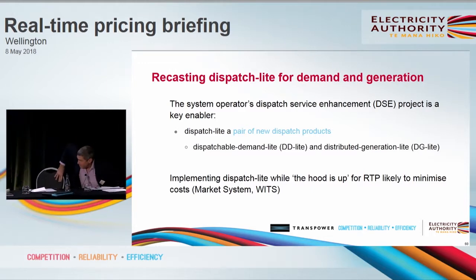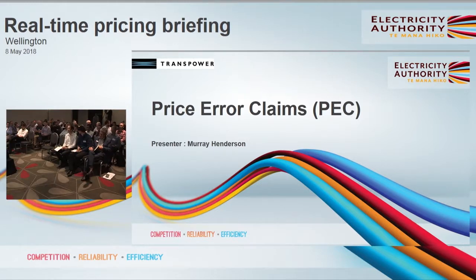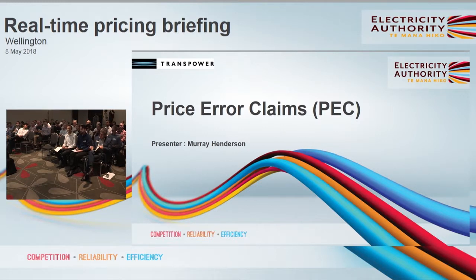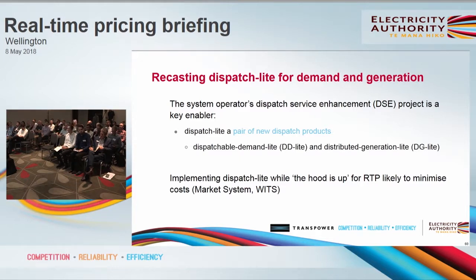I'll move on to pricing errors then. One more question. Since we're the only participant in dispatchable demand, a couple of questions. Firstly, EMI already discloses the Norski price so it is publicly discoverable now — though I think that's only the next day. Yeah, but if it doesn't change from day to day it's pretty predictable. Dispatchable demand gives us about 23 minutes from when we're dispatched to change our load. Will we continue to have that 23 minutes? No. Yeah, that's the problem. I think we may be best having a chat at lunchtime.